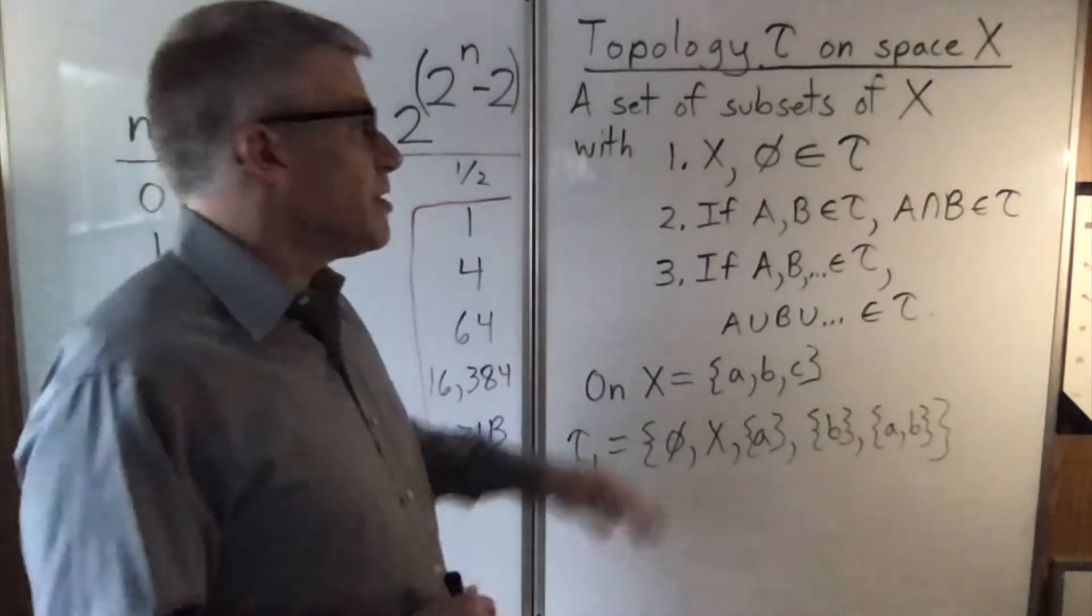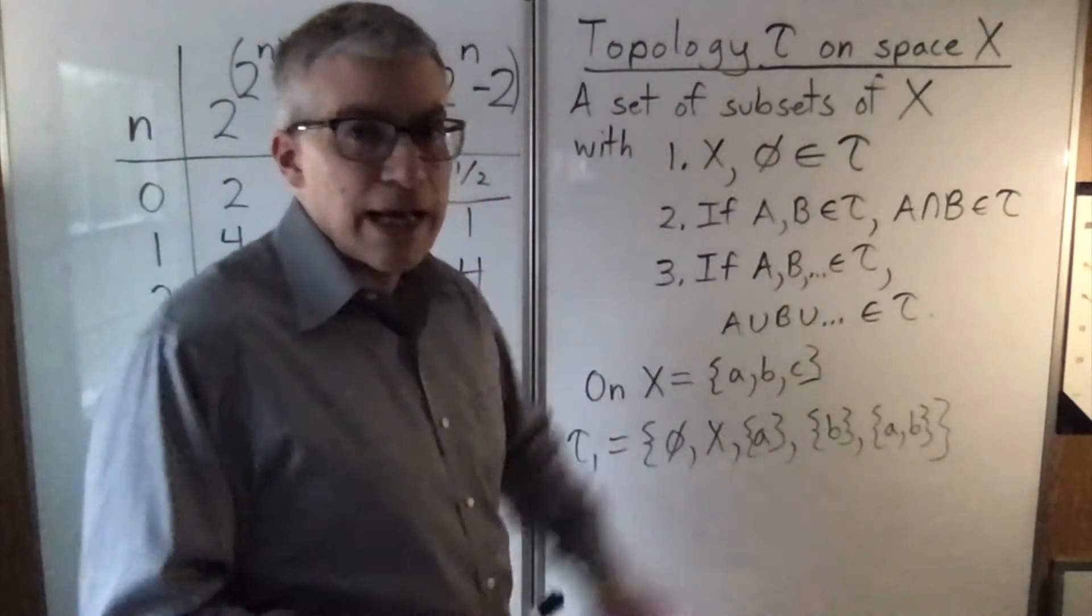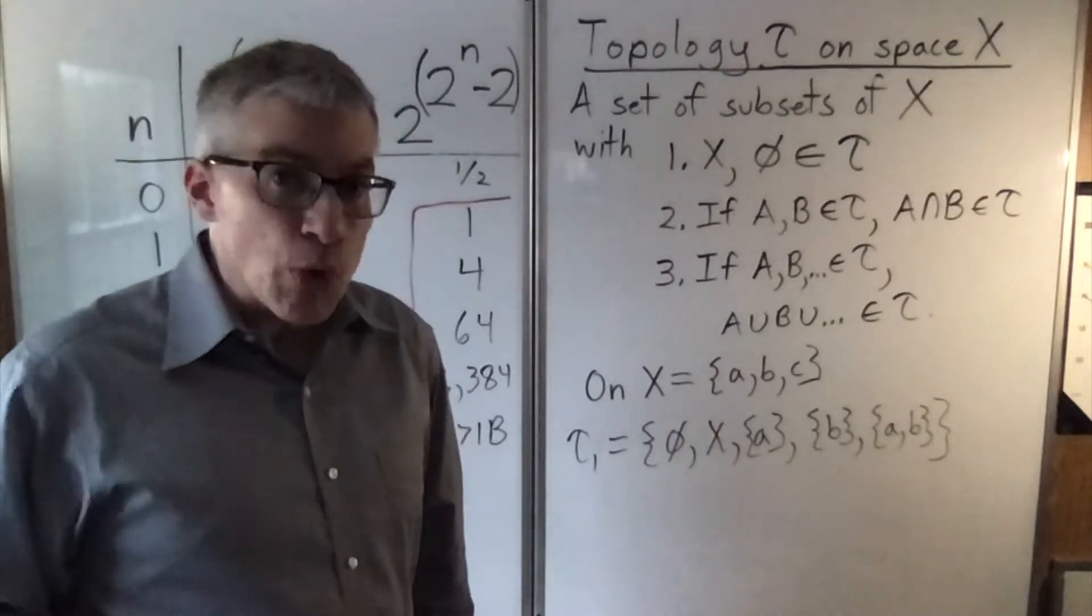Another option is, what if we put nothing in there except what we have to, X and phi? That's called the indiscrete topology. Those are kind of the boring extremes.